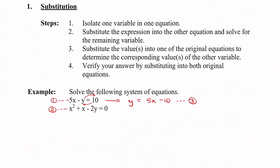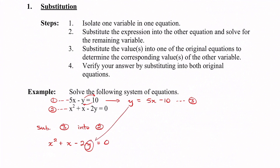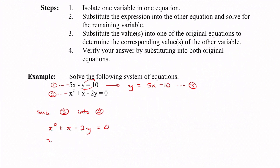In step 2, we substitute the expression into the other equation and solve for the remaining variable. I'm going to take equation 3 and substitute it into equation 2. Equation 2 was x squared plus x minus 2 times y equals 0, but now this y is going to be replaced with 5x minus 10.